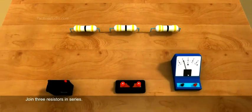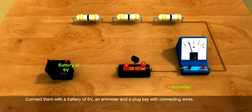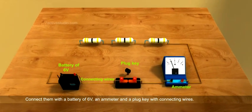Join 3 resistors in series. Connect them with a battery of 6 volts, an ammeter, and a plug key with connecting wires.